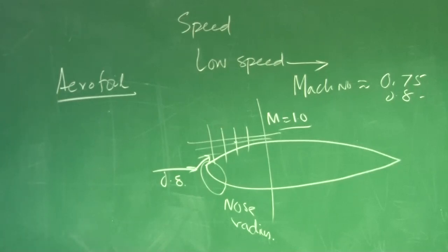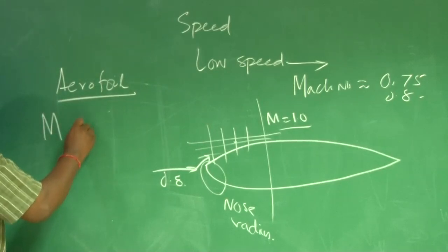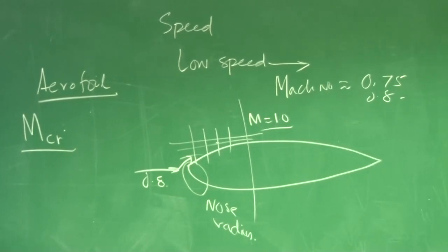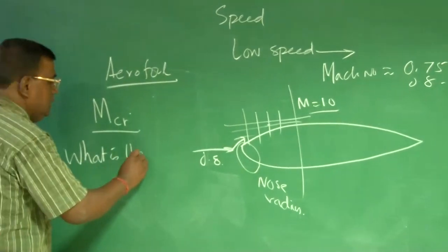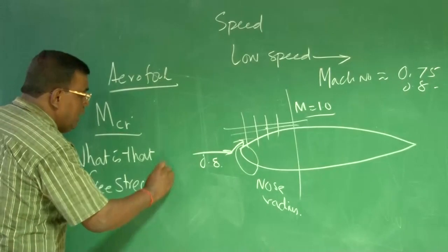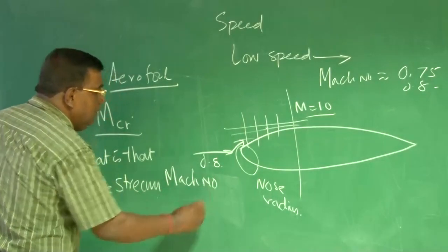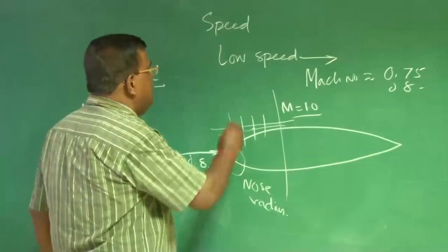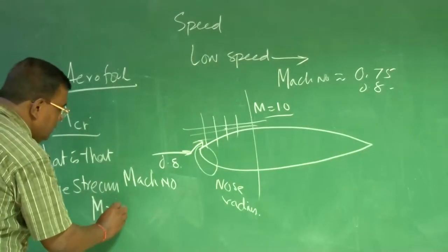So, aerofoils are characterized by another term called critical Mach number. If you design an aerofoil, and if you are operating around 0.75 or 0.8, you need to know what is the critical Mach number of the aerofoil. Meaning, thereby, what is that free stream Mach number, for which, for the first time, some portion of the airplane, it achieves Mach equal to 1. First time.